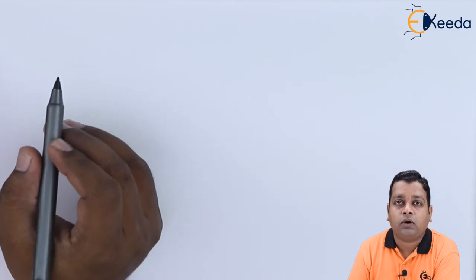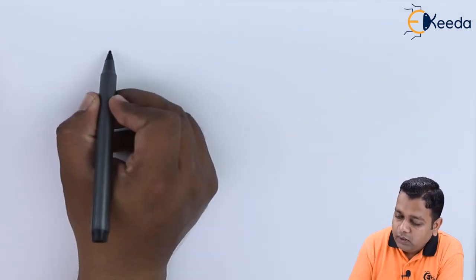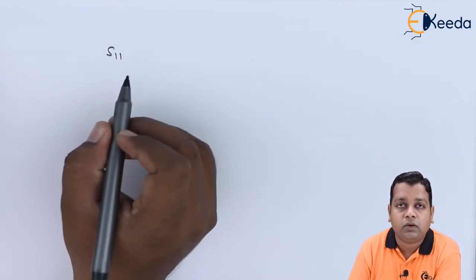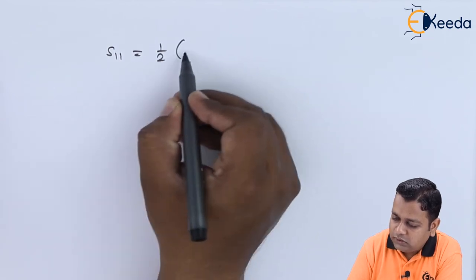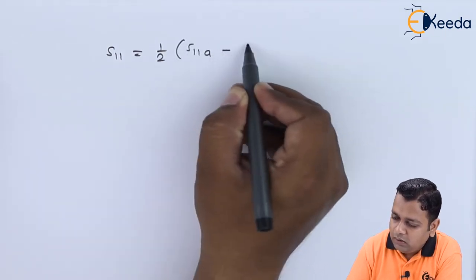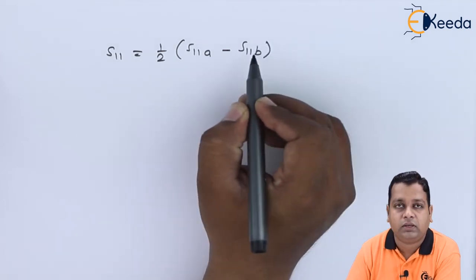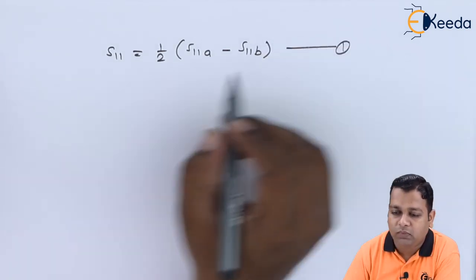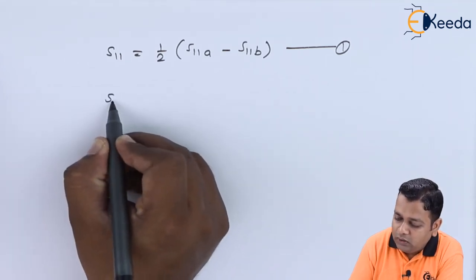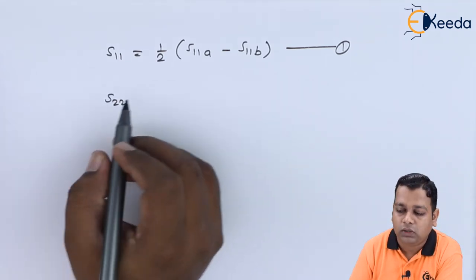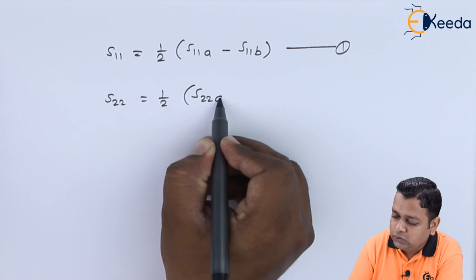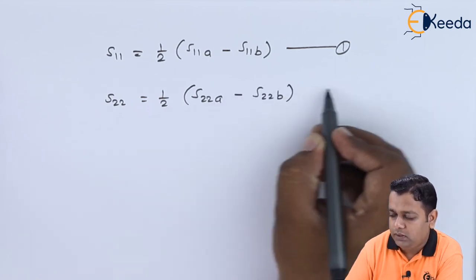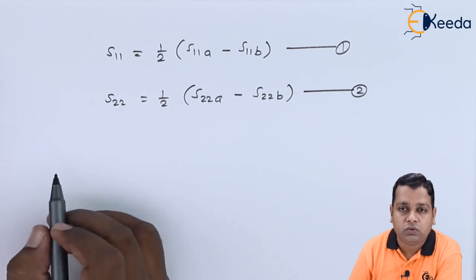The relationships for scattering coefficients are as follows. The overall scattering coefficient S_x11 is obtained by (1/2)(S_x11a − S_x11b) — equation 1. The scattering coefficient S_22 is obtained by (1/2)(S_22a − S_22b) — equation 2.